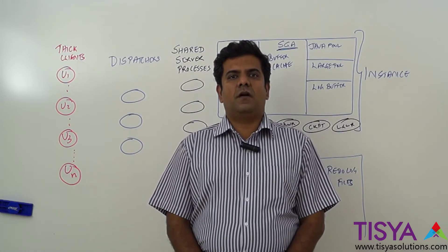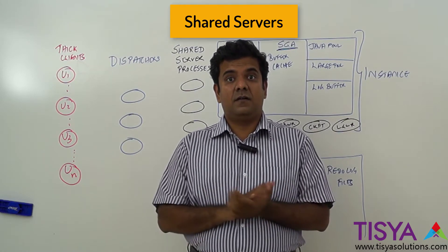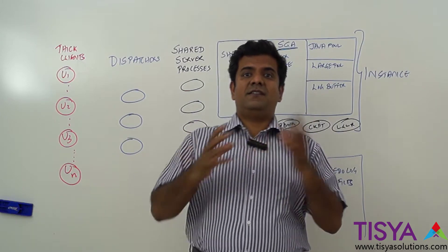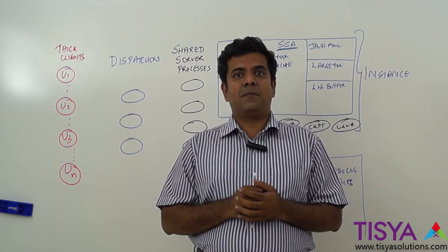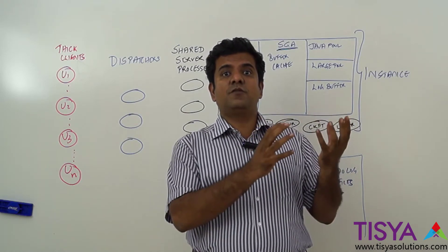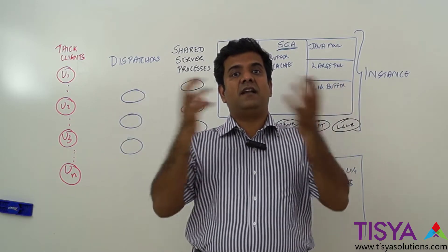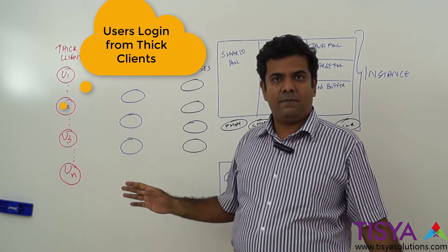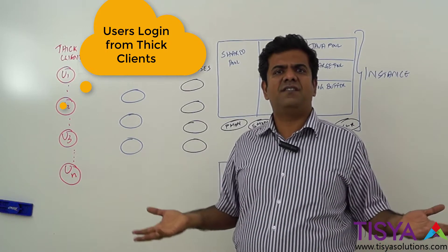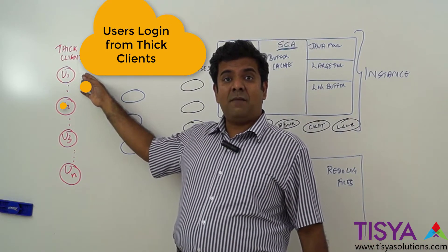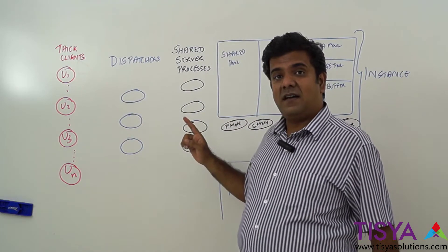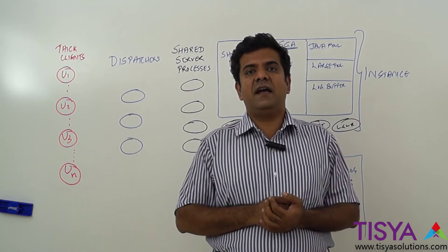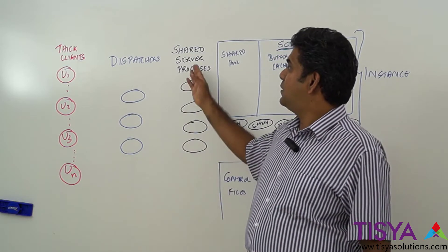In this video I'm going to explain the concept of shared server connections. In one of the initial introduction videos, I told you that whenever a user connects to a database, the connection request goes to the listener, which spawns a new server process, and then the server process and the user keep communicating. With many users logging in, the default mechanism creates a dedicated server process for each — but that's a lot of resources lying idle. Instead, we can make use of shared server processes to optimize resource utilization.